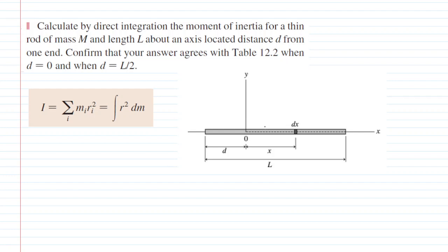We have to calculate by direct integration the moment of inertia for a thin rod of mass capital M and length capital L about an axis that is located a distance d from one end. One end of the rod would be this left end right here, and then the distance from that end to the axis of rotation, which will be right here at the origin, that distance is symbolized by d.